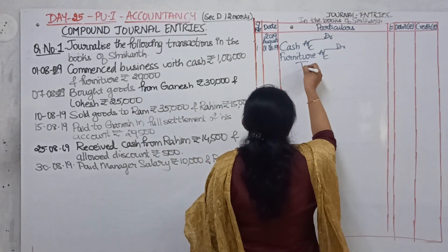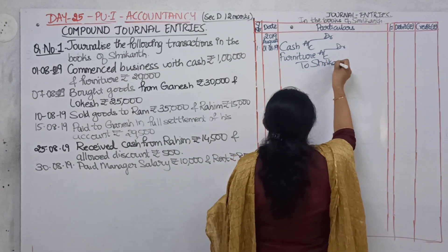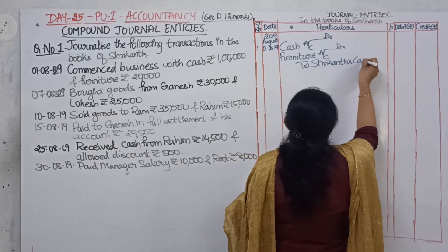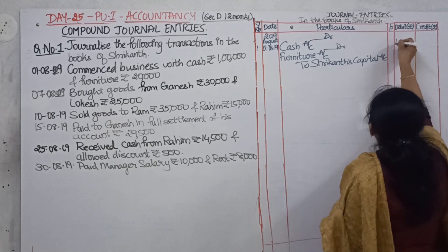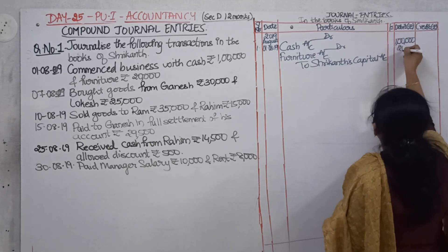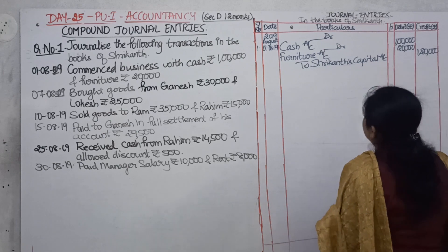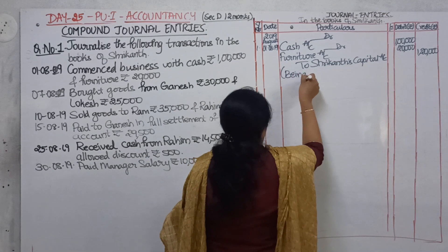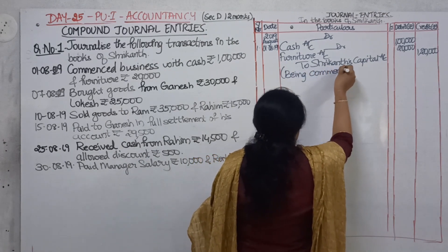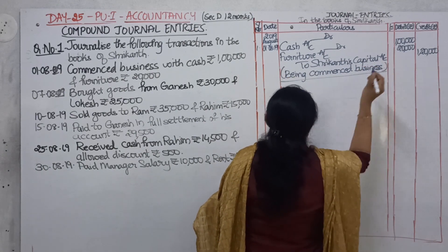Who is the giver? The owner is the giver. So Shri Khan's capital account is credited. The amount: cash is rupees 1 lakh, furniture is rupees 20,000, and the total amount brought is rupees 1 lakh 20,000. Give the narration: 'Being commenced business.' The narration should always be short, simple and meaningful.